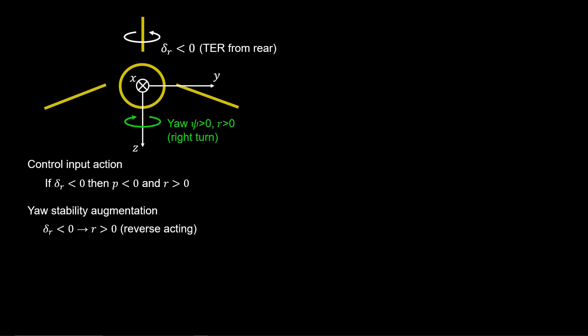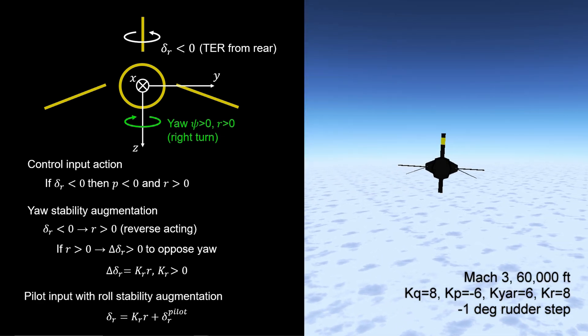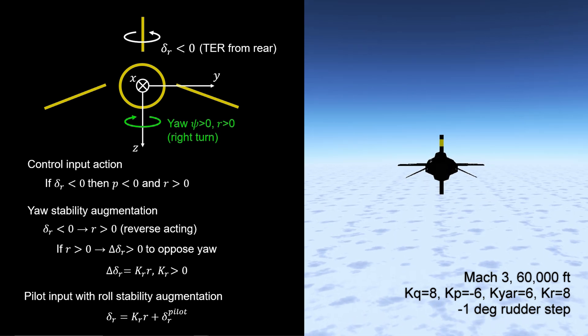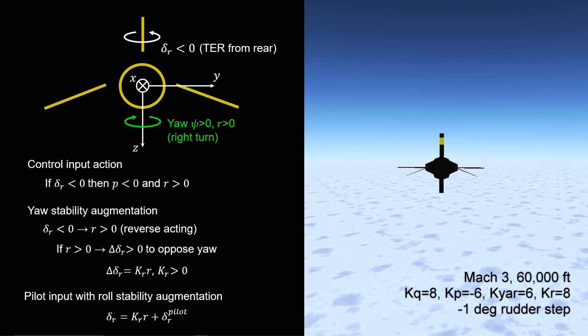So, if the rudder is negative, trailing edge right, then yaw rate is positive. Therefore, we must increase rudder angle to oppose the yaw rate. That is, use a positive feedback law. The yaw stability augmentation is then added to the rudder command from the pilot to produce a total rudder command that goes to the control actuation system.